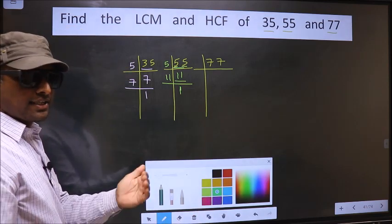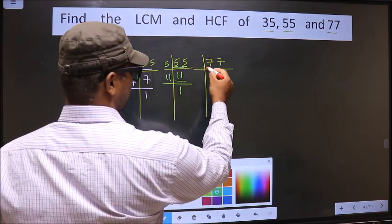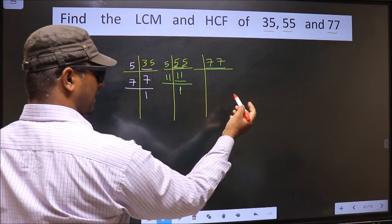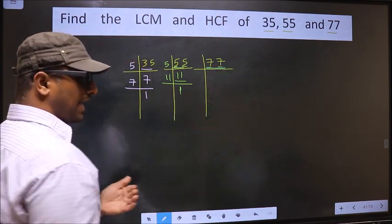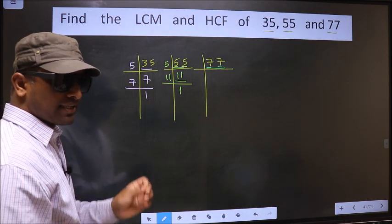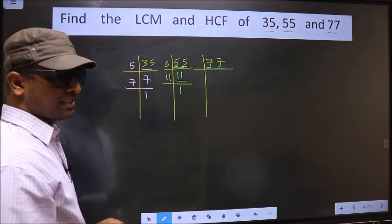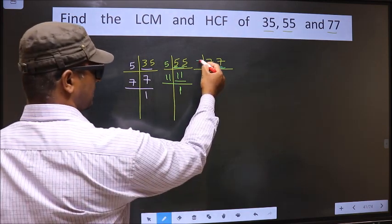Now the other number, 77. Here each digit is 7, and most important, 7 is a prime number, so we take 7 here. The first number 7—when do we get 7 in the 7 table? 7 times 1 equals 7.